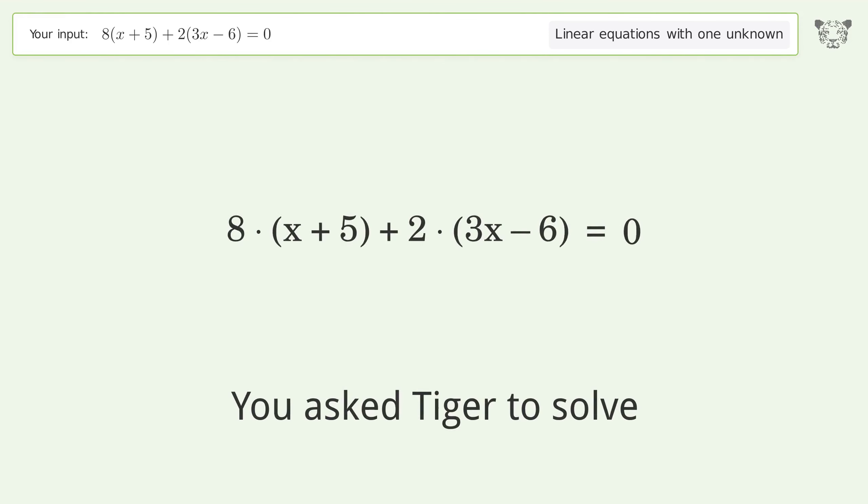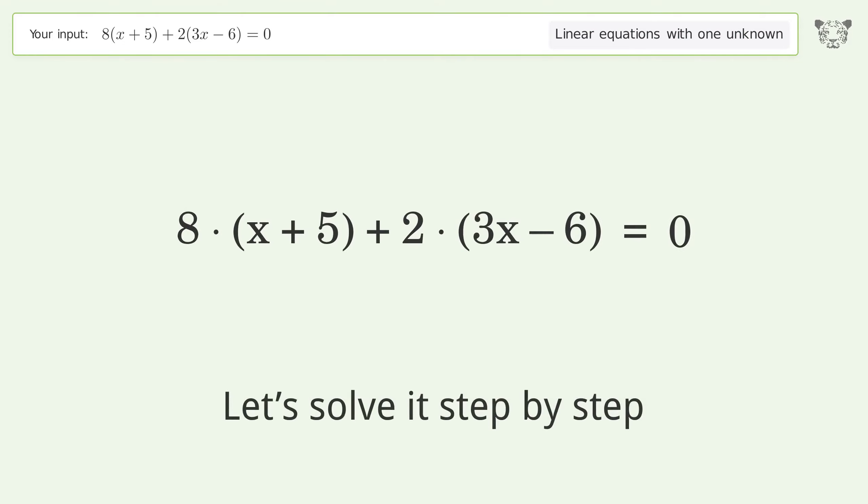You asked Tiger to solve this. It deals with linear equations with one unknown. The final result is x equals negative 2. Let's solve it step by step and simplify the expression.